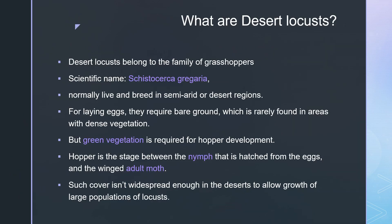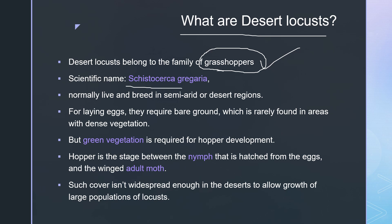First of all, let's try to understand what desert locusts are. They belong to the family of grasshoppers. Their scientific name is Schistocerca gregaria. I am emphasizing on the scientific name — please remember the term 'gregaria' — and you will understand why I am emphasizing on this just after two slides.